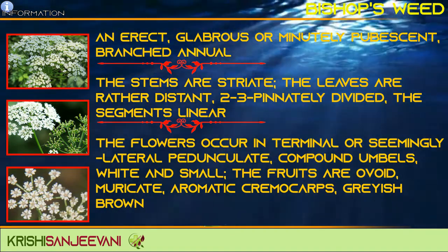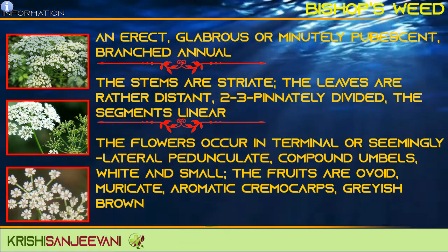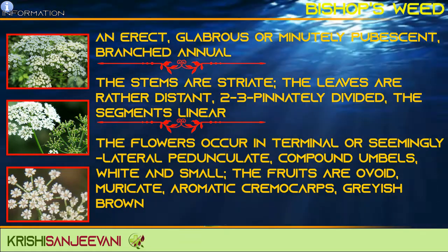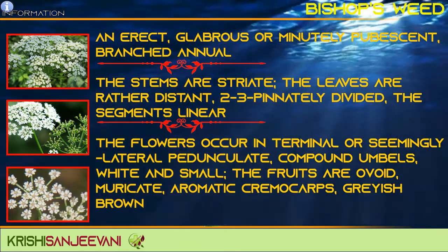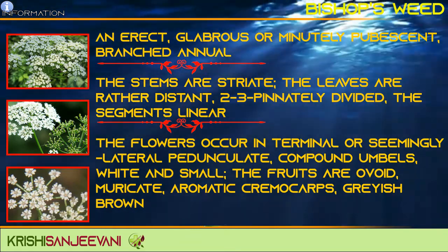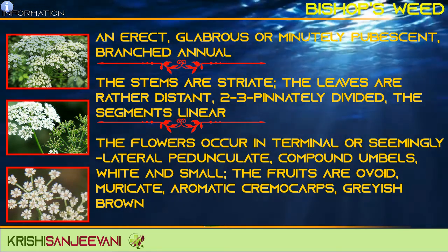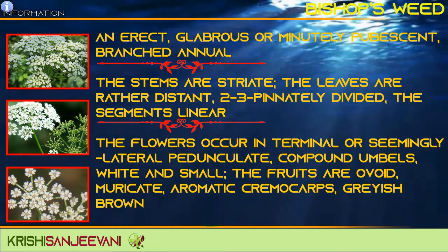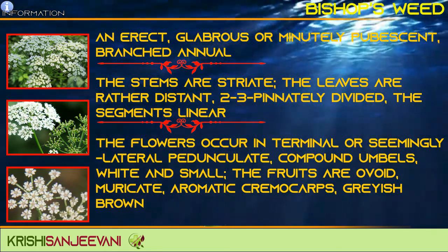The flowers occur in terminal or seemingly lateral, pedunculate compound umbels, and are white and small. The fruits are ovoid, bifurcate, aromatic cremocarp, grayish-brown in color.